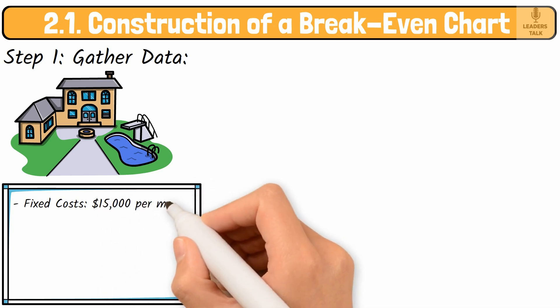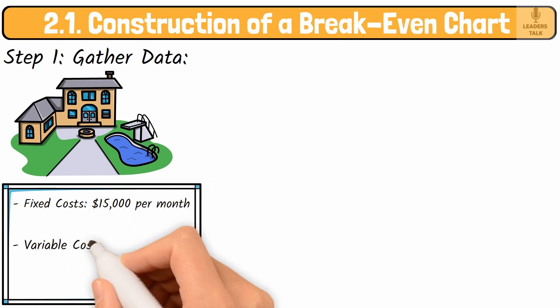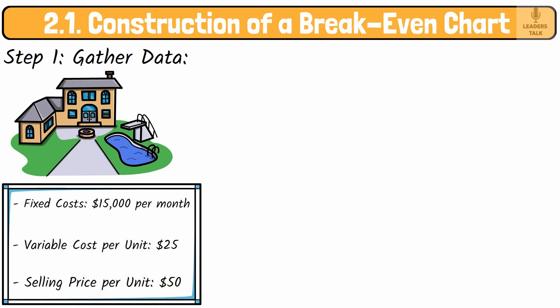Fixed costs: $15,000 per month. Variable cost per unit: $25. Selling price per unit: $50.